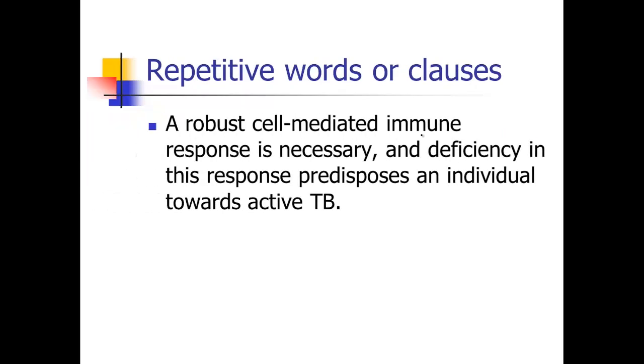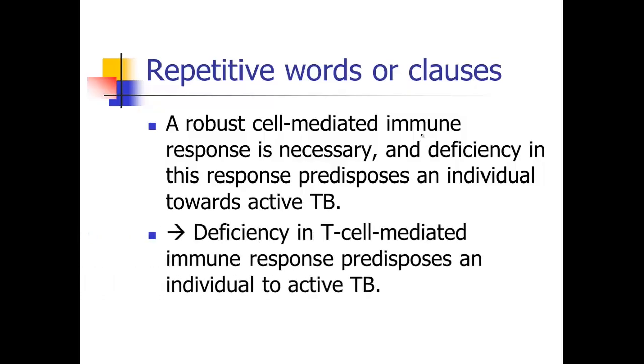Here's an example of some repetition. This is a repetitive clause. A robust cell mediated immune response is necessary and deficiency in this response predisposes an individual towards active TB. Notice how the two parts of that sentence actually really say the same thing. One says it's necessary and the other says if you don't have it, you're more likely to get TB. So both of those pieces are really kind of saying the same thing. So we can edit that and get rid of the repetition by just saying deficiency in T cell mediated immune response predisposes an individual to active TB. We didn't really need the first part of that sentence.